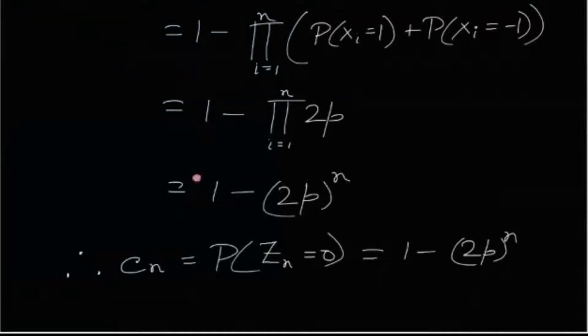That means 1 minus product of probability xi equals to 1 plus probability xi equals to minus 1. Now each of them are p. This is p and this is also p. That means 2p. We have 2p and there is a product term. So 1 minus 2p whole to the n. This is cn. This is probability zn equals to 0. This is the probability of z being 0.